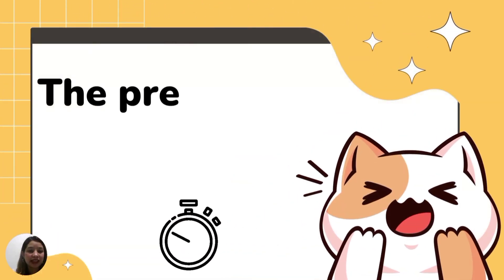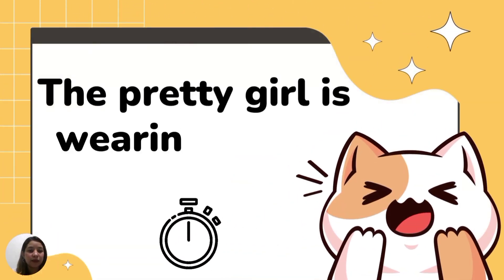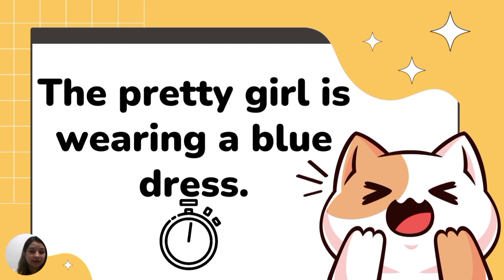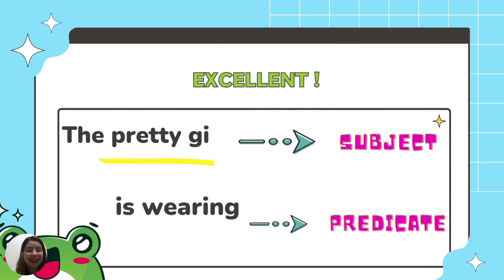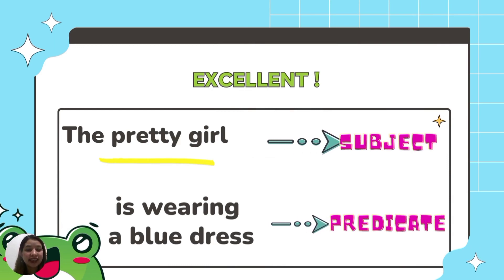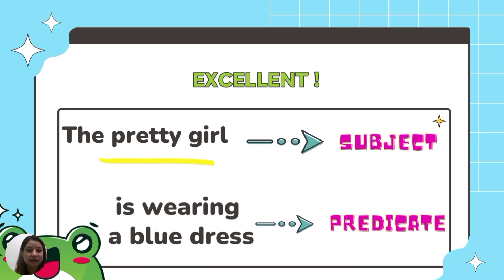Let's have the next sentence. The pretty girl is wearing a blue dress. Excellent! The pretty girl is the subject; is wearing a blue dress is the complete predicate.